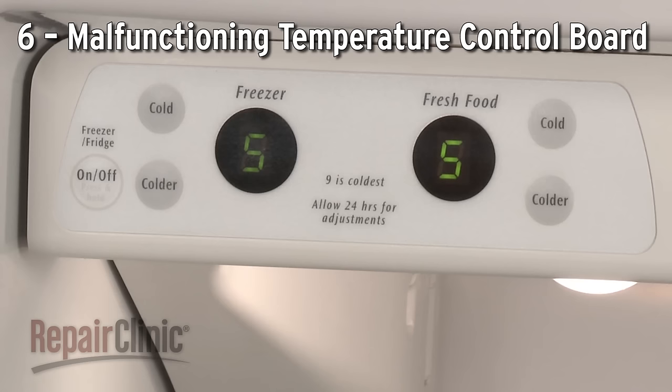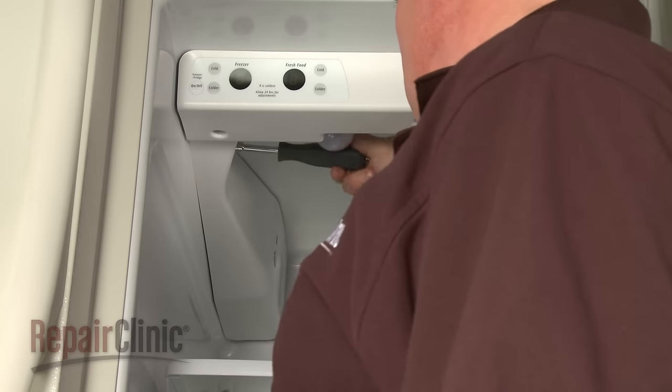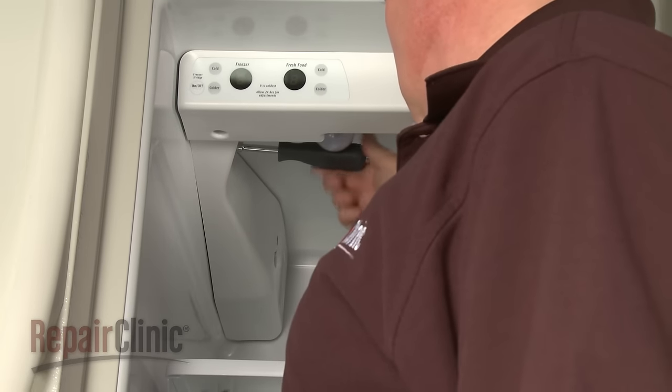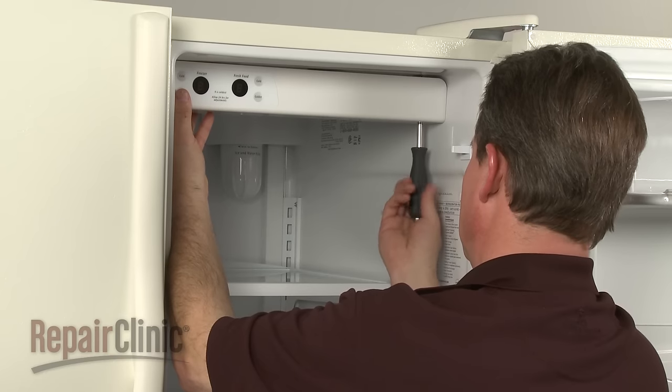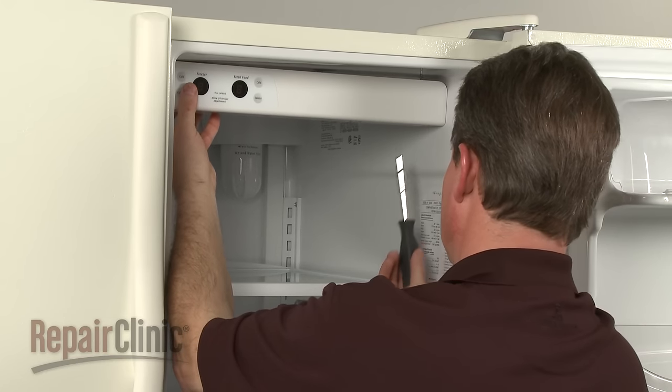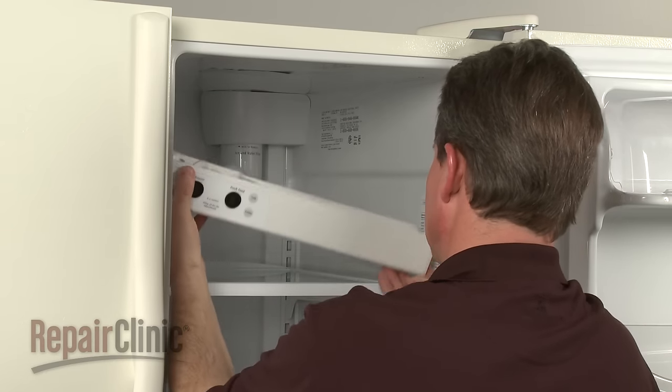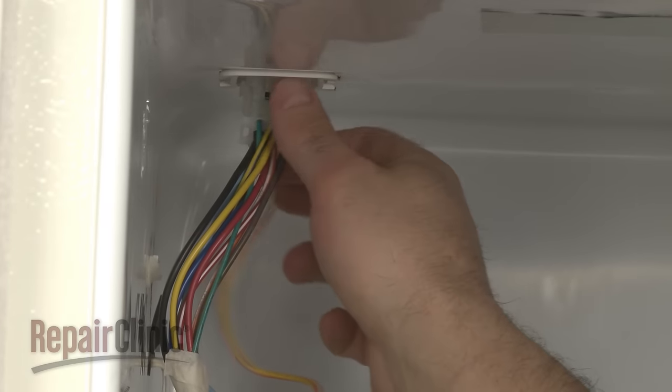The temperature control board allows voltage to be sent to the compressor and the fan motors. If the control board is malfunctioning, the cooling system won't cycle on. Since this is not a common problem, you should verify that the other components are working properly before replacing the board.